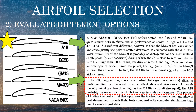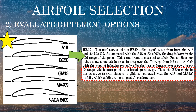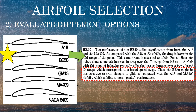Looking at the BE50, what stood out to me is the last paragraph which says the BE50 might be less sensitive to trim changes in glide as compared with the A18 and MA409 airfoils, which exhibit a more peaky performance. That actually makes me want to choose the BE50 over the A18, because as a hand-launch glider there are going to be variations in how you throw it and gusts it encounters. Having it less sensitive to trim changes might give better overall performance, whereas the A18 might give some really good throws and then some really bad ones. So I'm going to switch to the BE50.